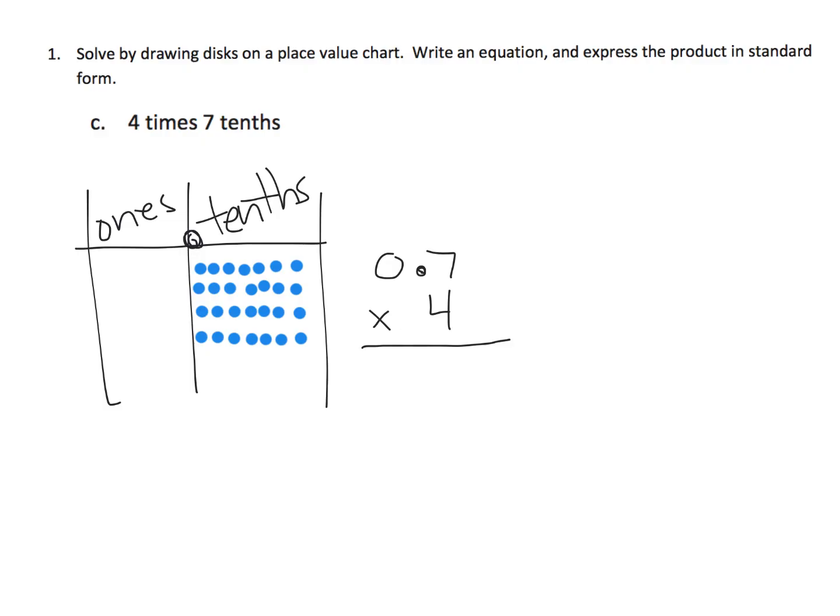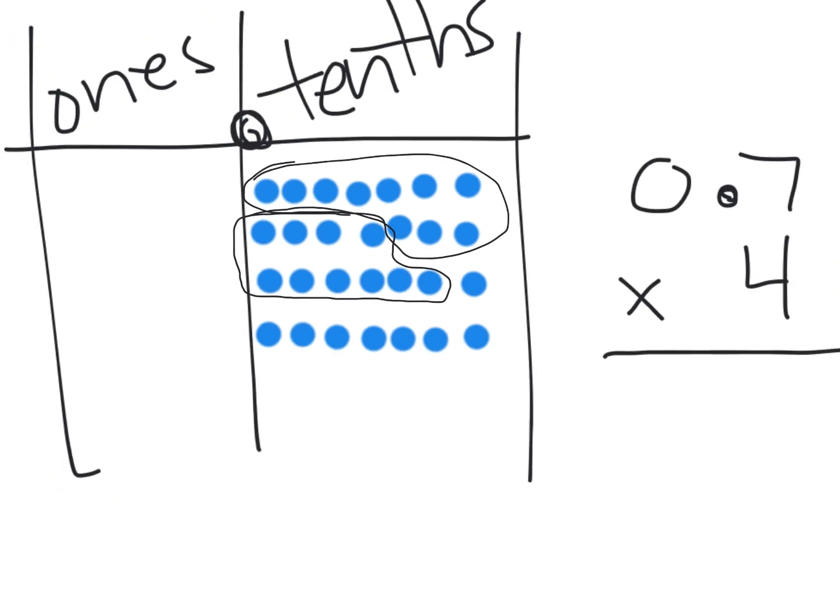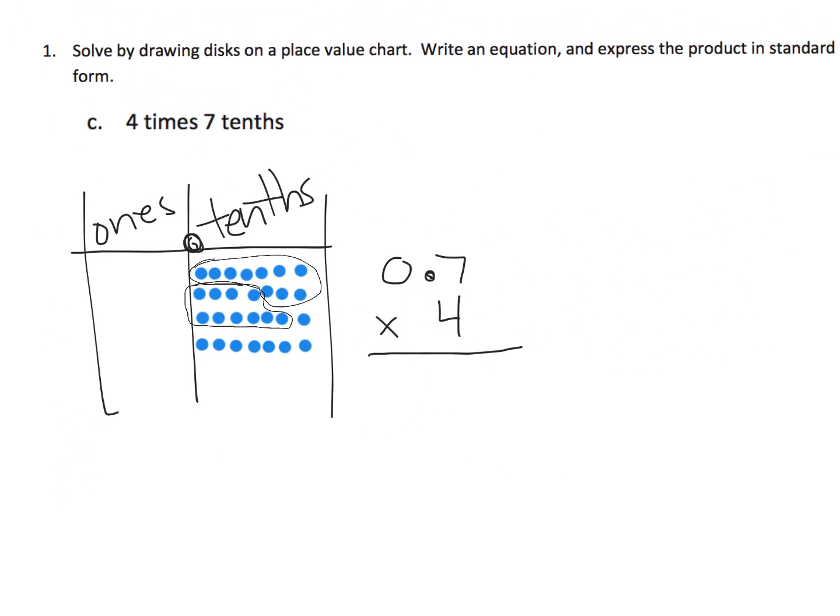So here is our seven tenths times four. Now we have to simplify, because of course we know anytime you have ten of a number, you can cash it in for one in the column to the left. So let's see. I'm going to zoom in a little bit here, and I'm going to say, okay, well, let's see. We've got seven, eight, nine, ten. So there's one. And then we've got four, five, six, seven, eight, nine, ten. Here's ten. And that's all the tens that we can regroup. So what does that mean? That means we end up with these guys coming over here. Ten tenths equals a one, and ten tenths equals a one. So we end up with two whole numbers, and we end up with eight tenths left over, because here's the eight tenths left over. And so our answer is 2.8, two wholes and eight tenths.